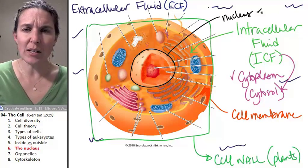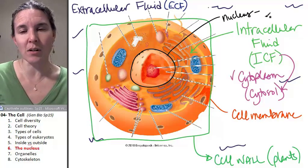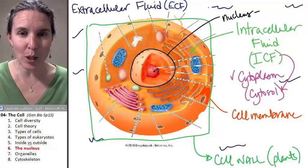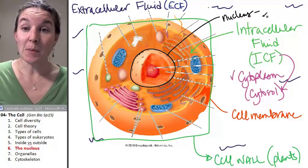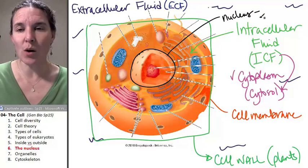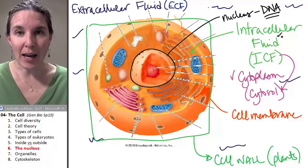Now, the nucleus, why? Who cares? Why is there a dot in the middle of our cell? Why is there a ball in the middle of our cell with another ball inside it? It's because the nucleus is the structure, the organelle that holds the DNA. And DNA is a nucleic acid.